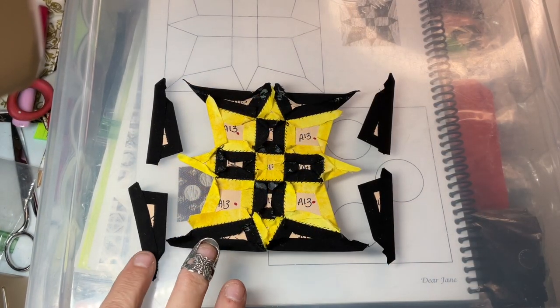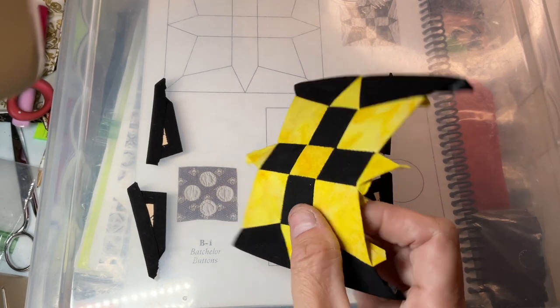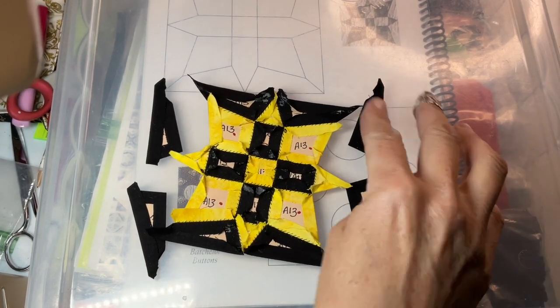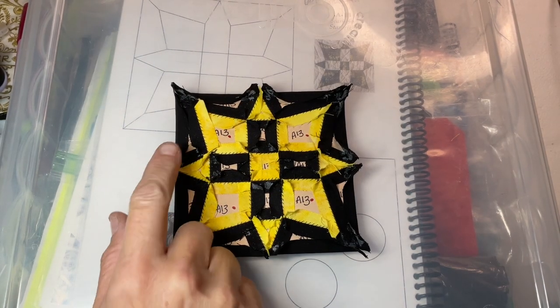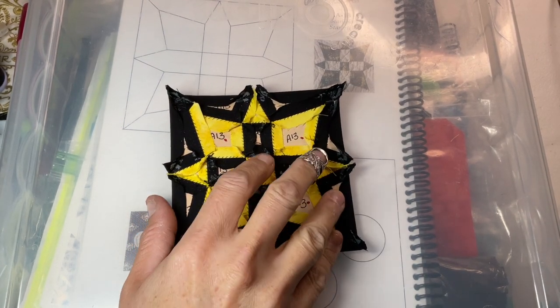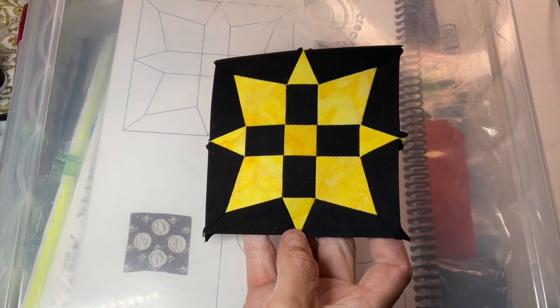So I've basted all of my outer pieces and I've attached the top and the bottom sections. So now I'm just going to attach the two side sections. So I've attached the side sections to my center section and now my A13 block has been completed.